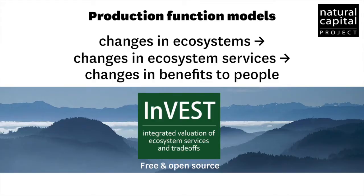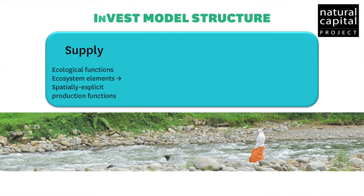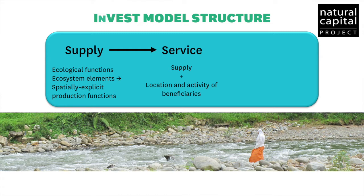Our InVEST models follow a production function approach. What we are seeking to understand with these models is the relationship between changes in ecosystem structure and benefits to people. We analyze that relationship by measuring changes in ecosystem services. This follows a classical ES framework. We start with ecosystem service supply — the quantity of service feasible for a given landscape to provide — then use the location, activities, and preferences of beneficiaries to translate the service all the way from supply to value. This framework allows us to take social context and social values into account.